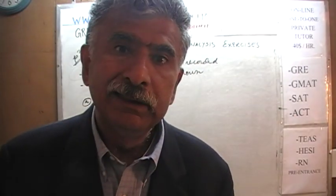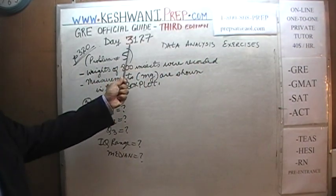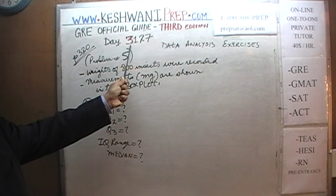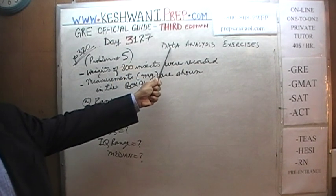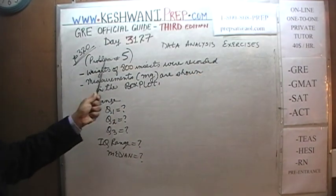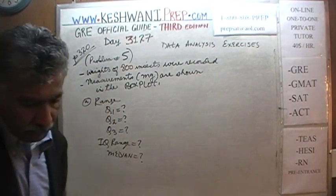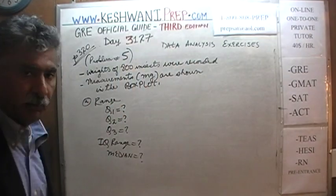Today is our lesson number 127 — Day 3127. Three is to signify the fact that we are in the third edition: third edition, day 127. We are in the process of solving data analysis exercises and today we will do problem number five, which you will find on page number 320.